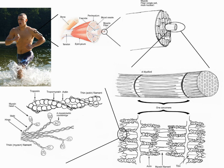All muscles are derived from paraxial mesoderm. The paraxial mesoderm is divided along the embryo's length into somites, corresponding to the segmentation of the body most obviously seen in the vertebral column. Each somite has three divisions: sclerotome which forms vertebrae, dermatome which forms skin, and myotome which forms muscle. The myotome is divided into two sections, the epimere and hypomere, which form epaxial and hypaxial muscles respectively. The only epaxial muscles in humans are the erector spinae and small intervertebral muscles, and are innervated by the dorsal rami of the spinal nerves.